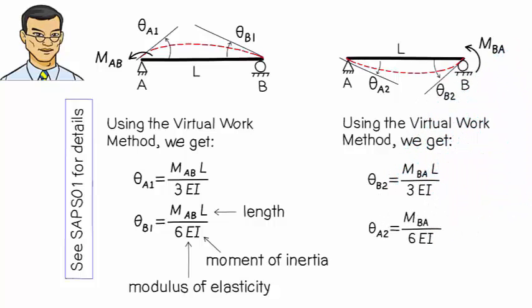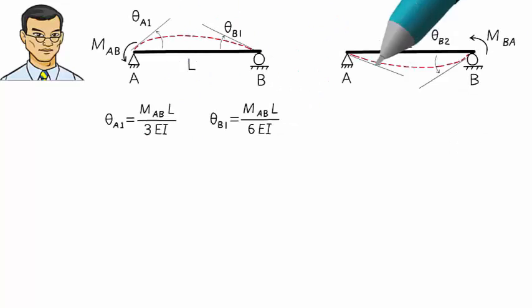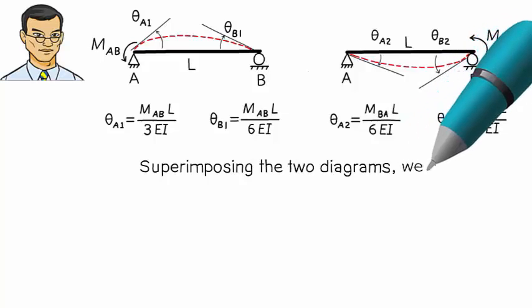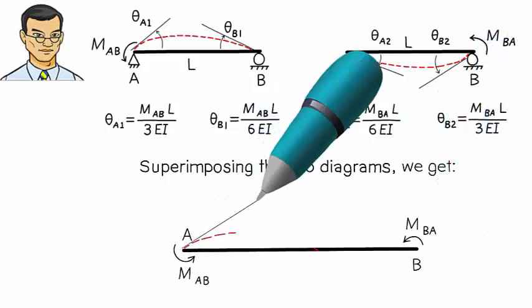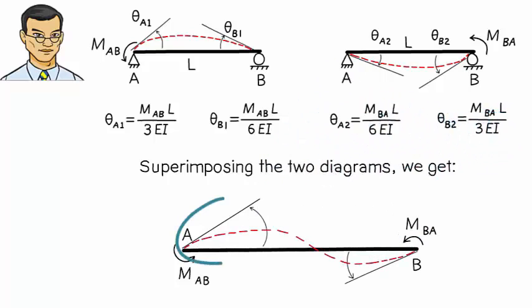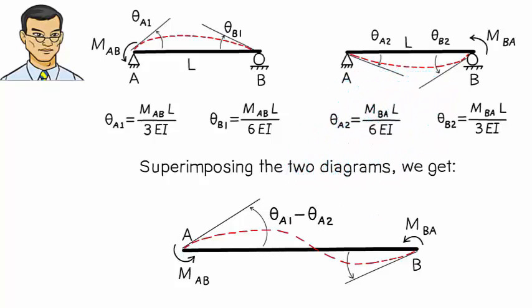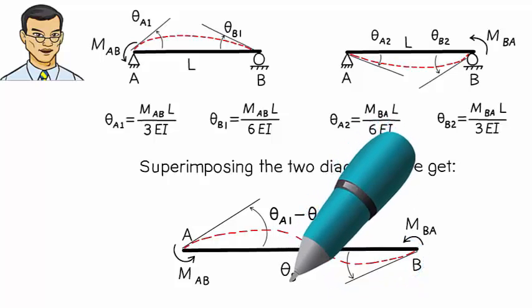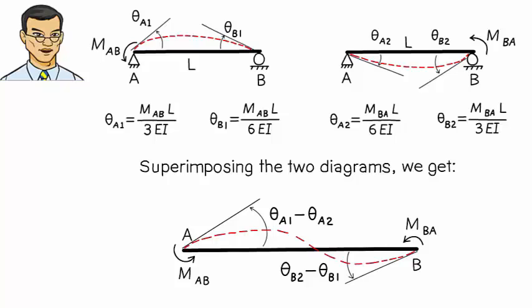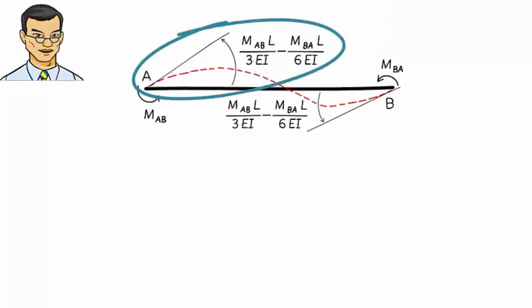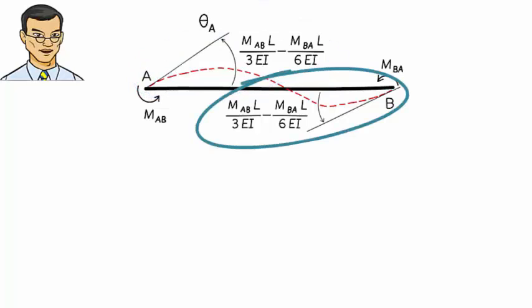Okay, now what do we get if we superimpose these two diagrams? We get this diagram, where this rotation can be written as theta A1 minus theta A2, and this rotation can be written as theta B2 minus theta B1.